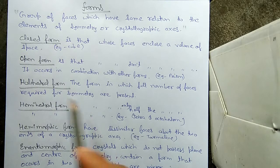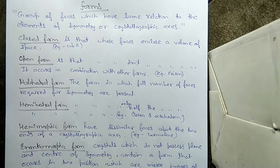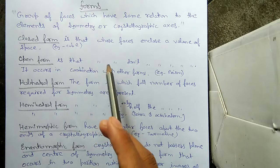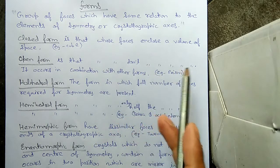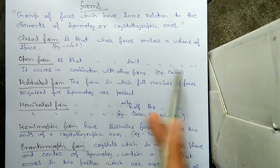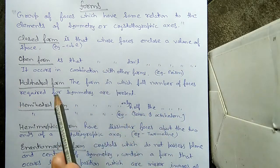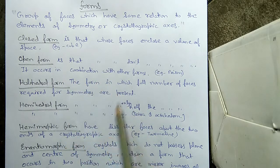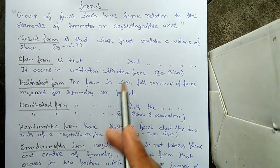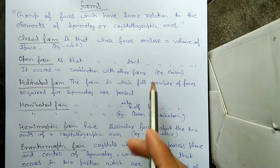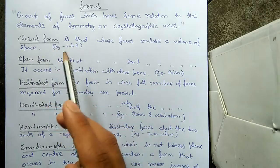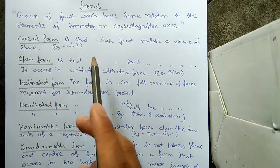Next is the open form. The open form is one whose faces do not enclose a volume of space. It does not enclose a volume. This kind of form occurs in combination with other forms, and its example is the prism, while the example of a closed form is the cube.